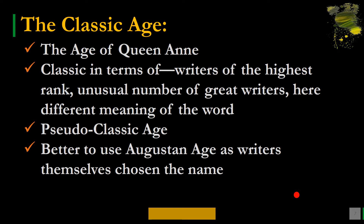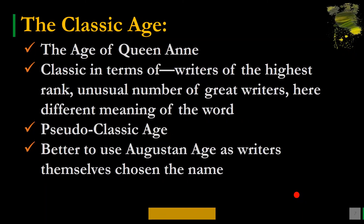Why is this age called the Classic Age? There are some objections to the term 'Classic Age' for 18th century literature. This age is also known as the Age of Queen Anne, but scholars found no great influence of Queen Anne on the literature of the 18th century. Hence, many scholars and literary historians do not use the term 'Age of Queen Anne'; they use 'Augustan Age' or simply '18th century literature.'